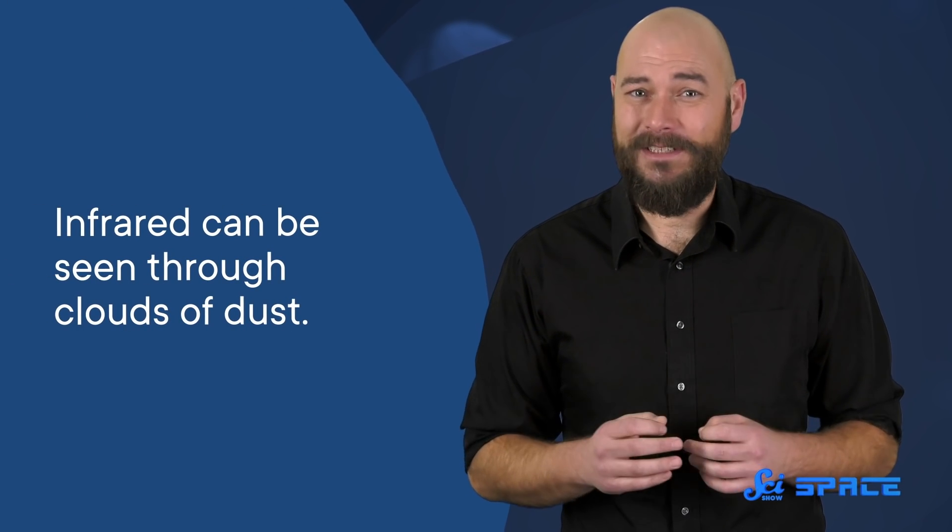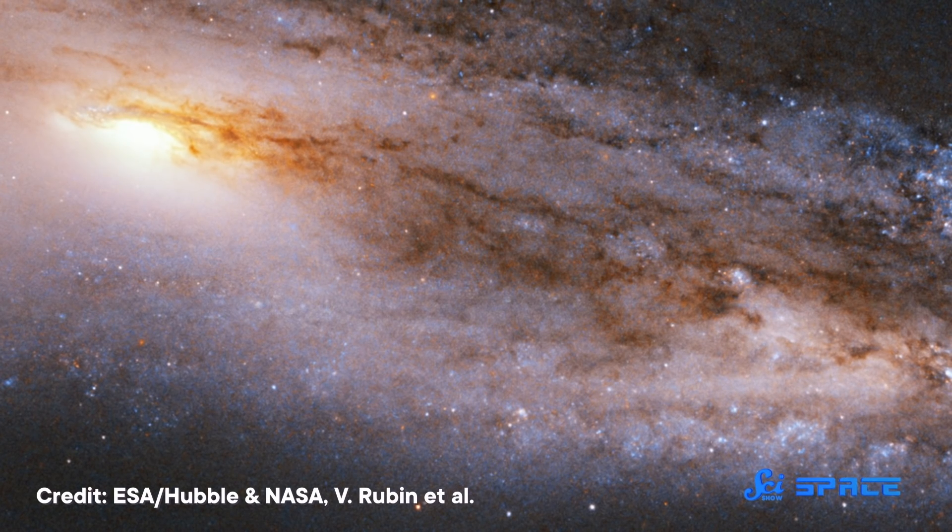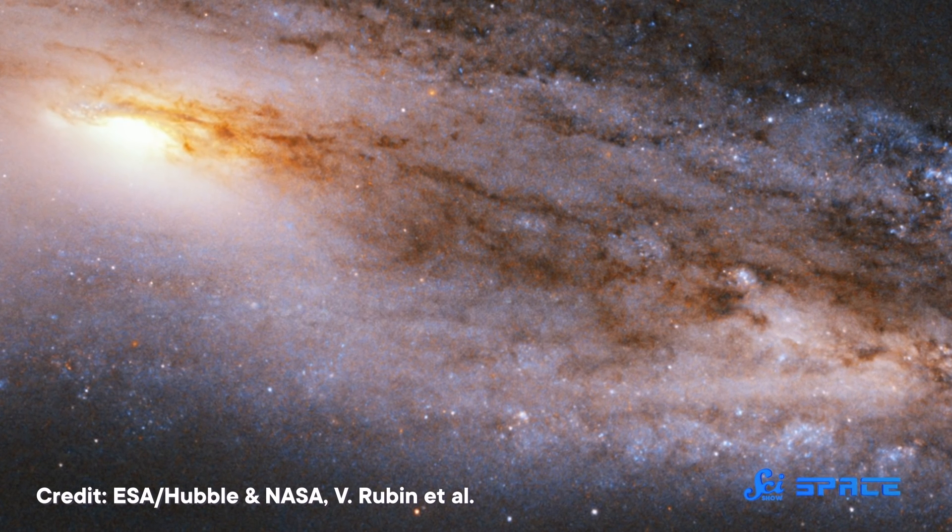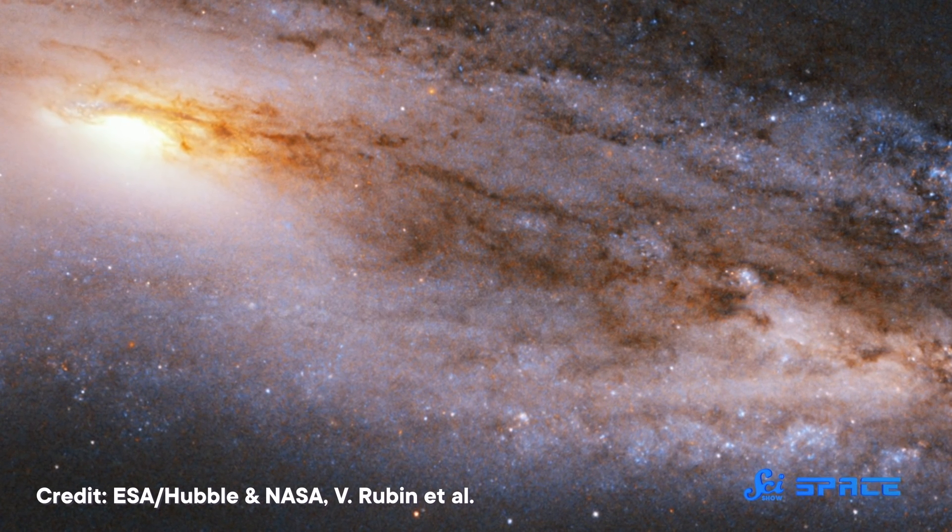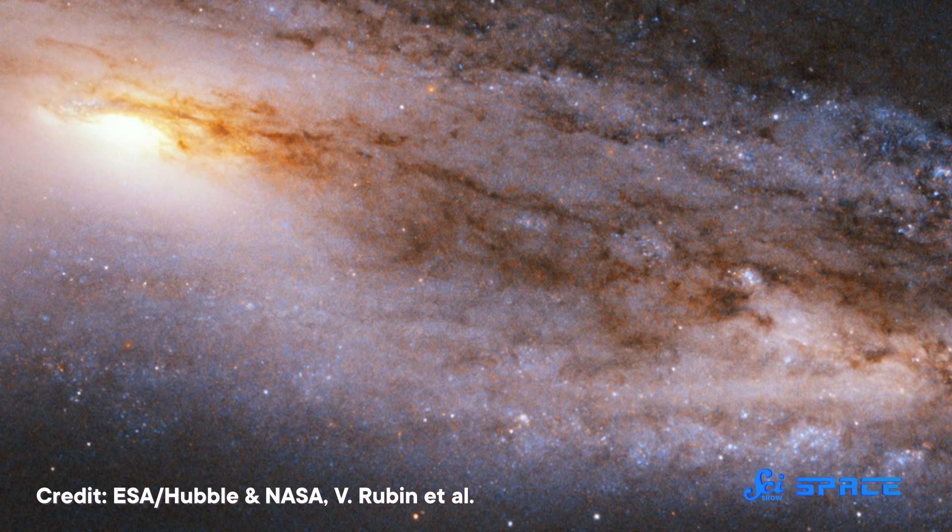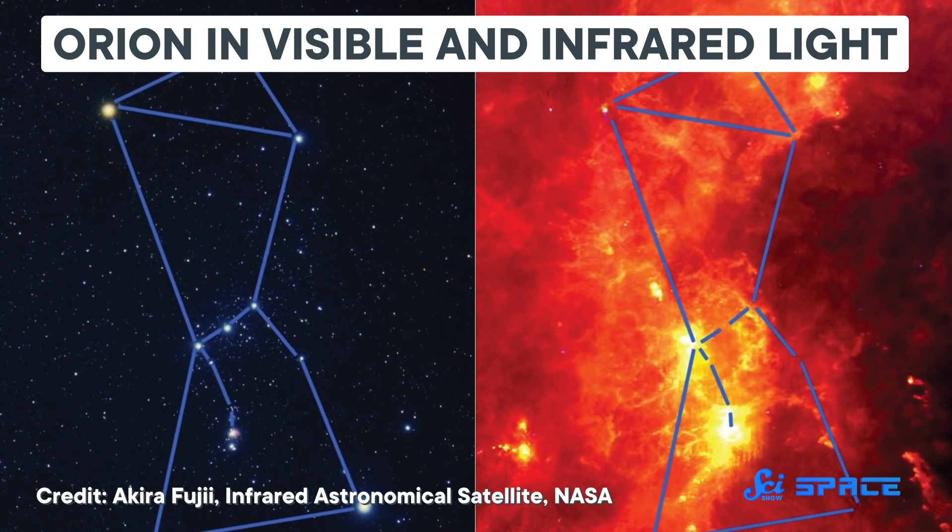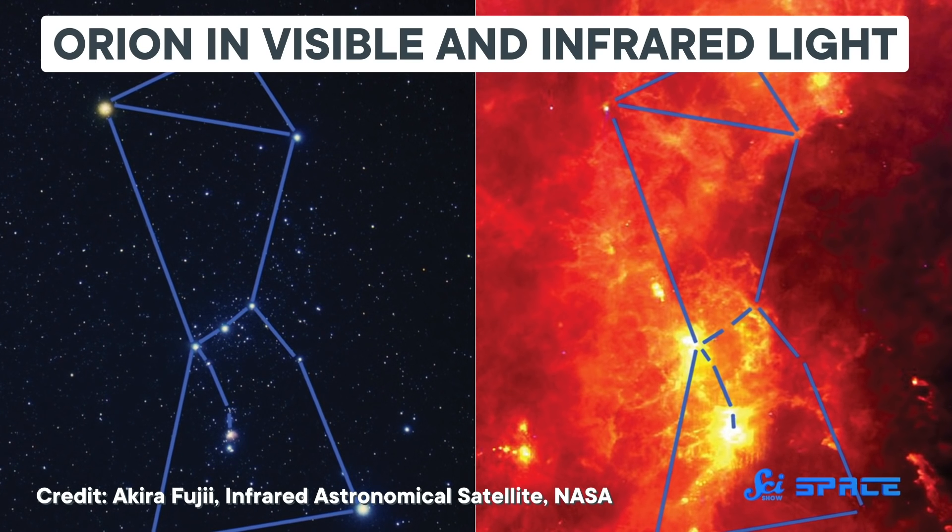Its second big one is that it can be seen through clouds of dust. Motes of dust floating in space are similar in size to the wavelength of visible light. So when something like a star shines bright behind a cloud of dust, all we can see is the dust because the star's visible light gets absorbed or deflected by it. Infrared, on the other hand, has a wavelength longer than the typical size of dust. So the light sails right past it.